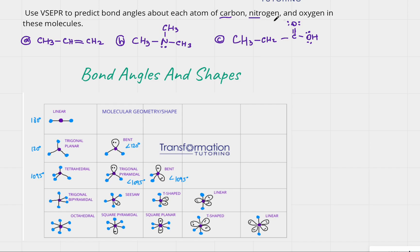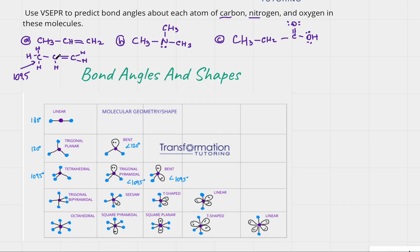For the first molecule, we can draw it out: CH3 means this carbon is connected to three hydrogens, then another carbon connected to a hydrogen via a double bond, and then a carbon connected to two hydrogens. Looking at this first carbon, it's connected to four atoms — no lone pairs — so it's tetrahedral and the bond angle is 109.5°.